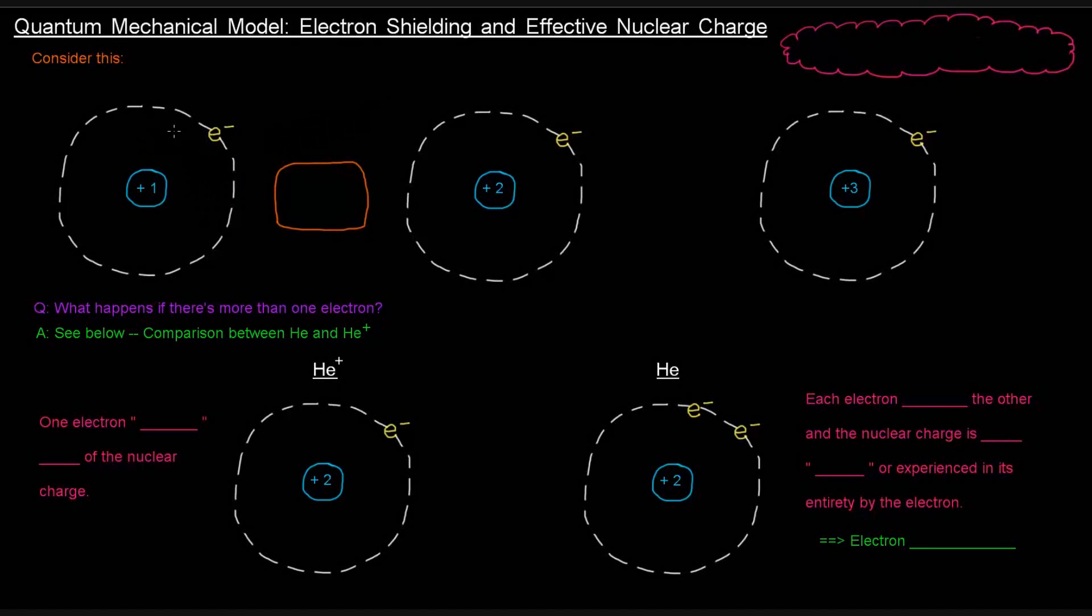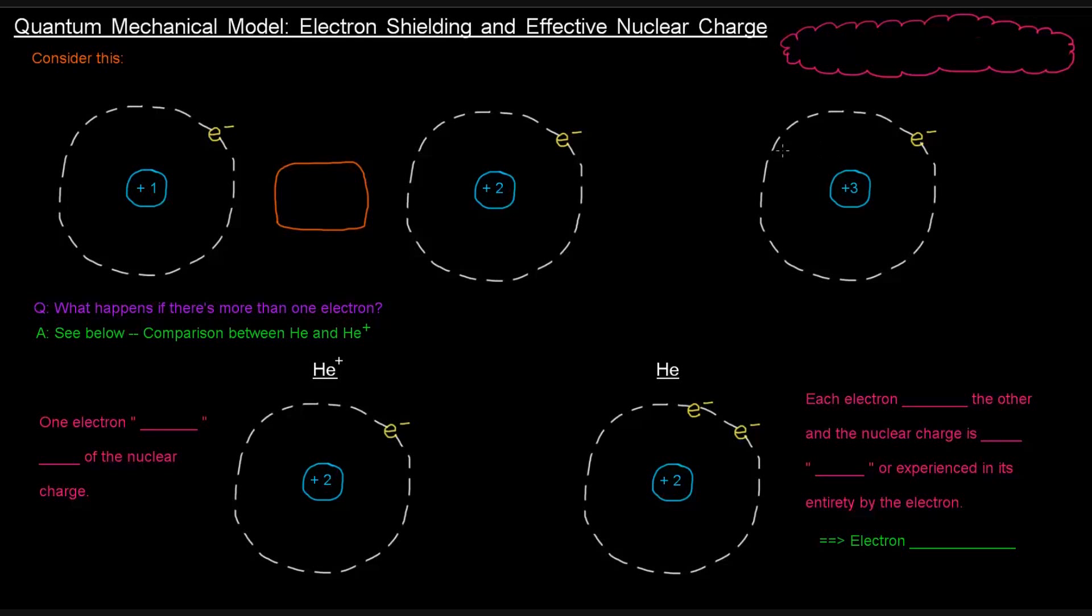Consider this situation where we have three model atoms, and each one only has one electron. The only difference between these three is what's going on in their nucleus. The first one has a plus one charge, so it has one proton. The second one has a plus two charge, so two protons. The third one has a plus three charge, three protons.